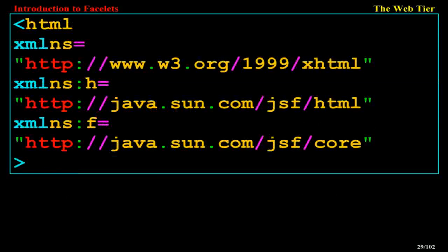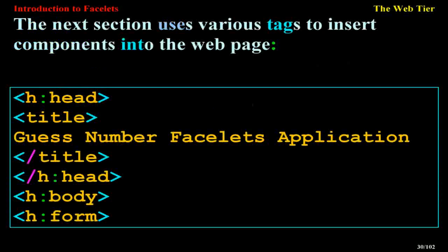The next section declares the XML namespaces for the tag libraries used in the web page: xmlns equal to http://www.w3.org/1999/xhtml, xmlns:h equal to the JSF HTML namespace, and xmlns:f equal to the JSF core namespace. The next section uses various tags to insert components into the web page.